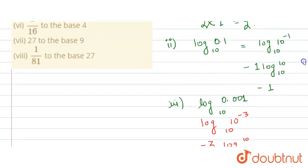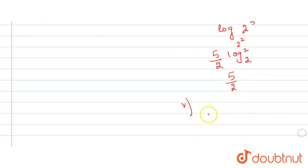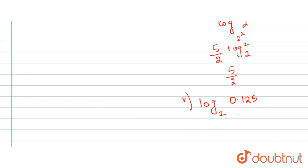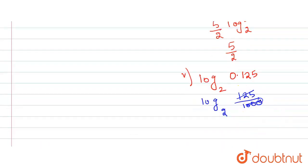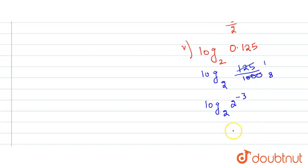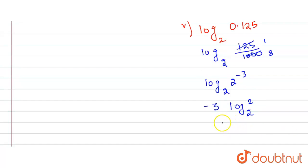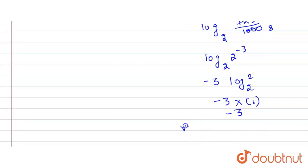The fifth part is log 0.125 to the base 2. First, 0.125 equals 125 over 1000, which simplifies to 1 over 8. I can write 1 over 8 as 2 raised to power minus 3. Taking minus 3 outside the log gives minus 3 times log 2 to the base 2. Since log 2 to the base 2 equals 1, the answer is minus 3.